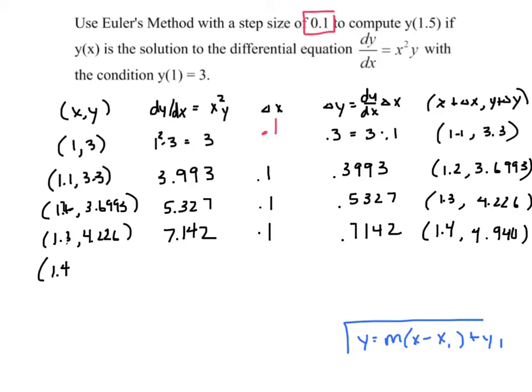Alright. We bring that down. We keep going. And it is a little bit tedious. There's no question about it. But it gives us, again, some method of estimating a function's value based on its derivative. Okay. So 1.5. And we add 4.940 to 0.968. And we get 5.908. So this is what Euler's method would estimate is y of 1.5.